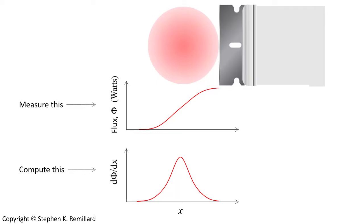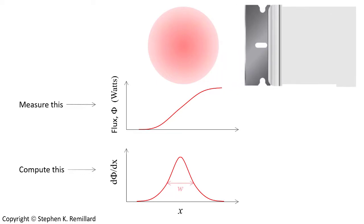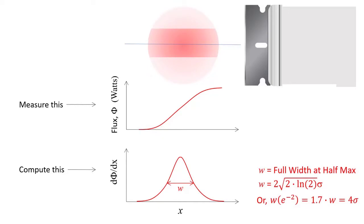The power continuously increases, and that is the integral of the actual power throughout the beam. The power distribution of the beam is Gaussian, so the top graph is the integral in x of a Gaussian. A Gaussian has a full width at half maximum of w, which is related to the standard deviation. When talking about the width of a laser beam, you might use full width at half maximum, or as is commonly done, the e^-2 width — the width when the amplitude has gone to 13.5% of its peak. For a Gaussian, that happens at 4σ, four times the standard deviation.